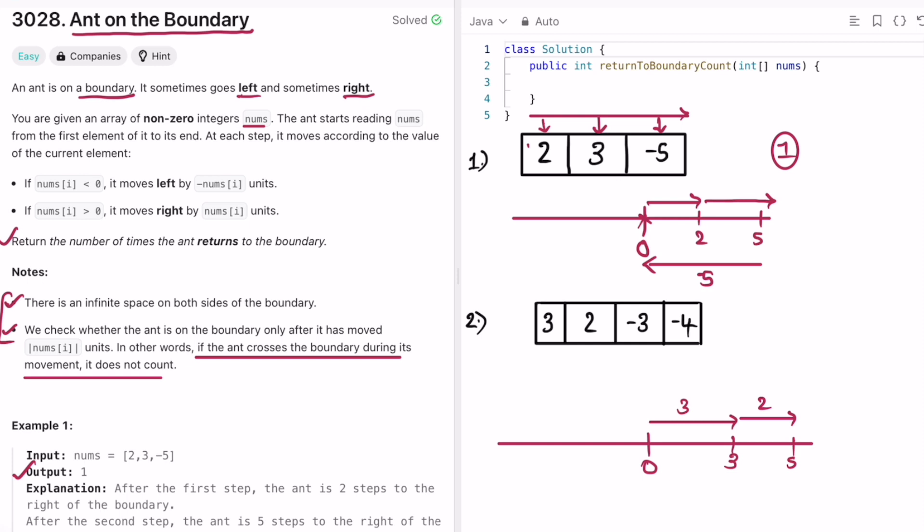So it went three steps, it goes two steps here, and now it goes three steps back. So it comes to two. So it came three steps back and now it's at two. And from here it goes four steps to its left. So it comes back to minus three.